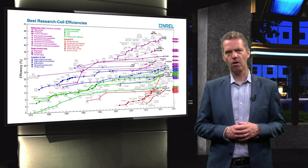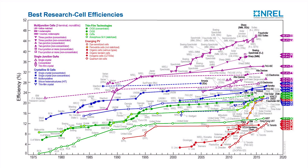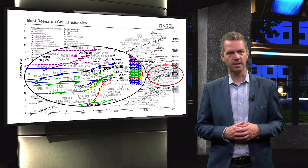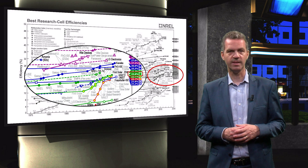First, we will look at the overview of the achieved conversion efficiencies for solar cells over the years for the CIGS solar cell technology. The National Renewable Energy Laboratory, abbreviated to NREL, in the United States keeps track of the record conversion efficiencies for all solar cell technologies. In this graph from early 2017, we see that the record efficiency for a CIGS cell under one sun illumination is 22.6%, implying a high potential for this technology. This efficiency was achieved by the German Research Institute Zentrum für Sonnenenergie und Wasserstoff, often abbreviated to ZSW.